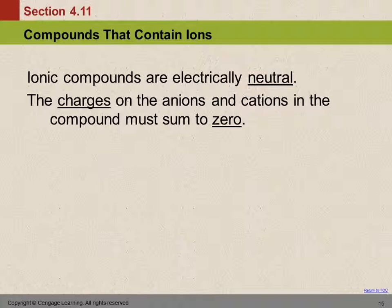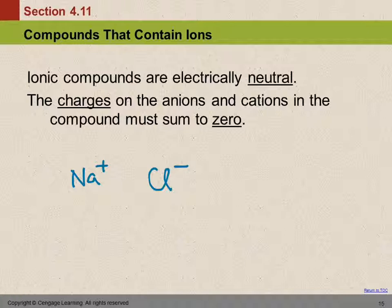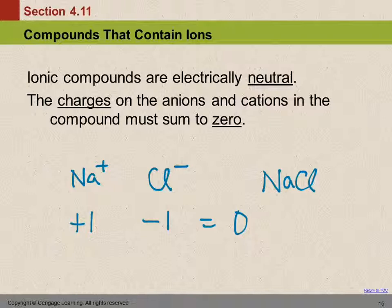In that example with the sodium and the chloride, we had sodium with a plus one charge, and we've got chloride with a negative one charge, and we see that plus one and minus one add up to zero. And so we put them together, and we have a compound, sodium chloride, which is what table salt is.